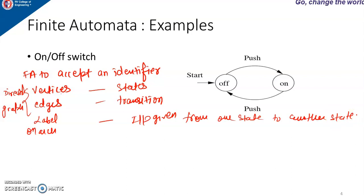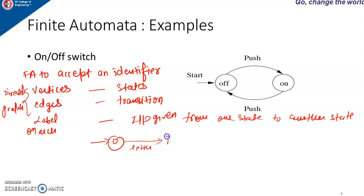What is a valid identifier? An identifier should be a combination of letters and digits. It cannot start with a digit — it has to always start with a letter, and that letter can be a small letter or a capital letter. The machine will be initially in state 0, which is the initial state. If we give input letter, the machine goes to state 1, and after the letter we can give any combination of letters and digits.